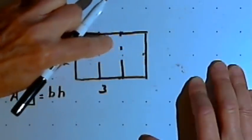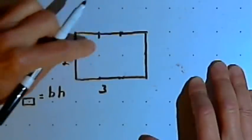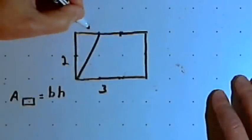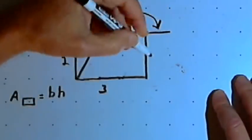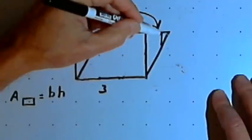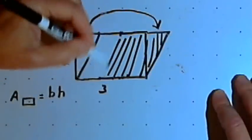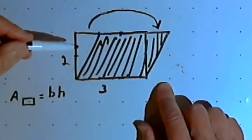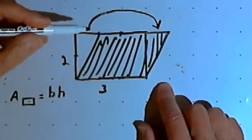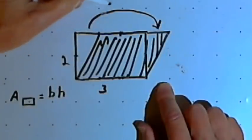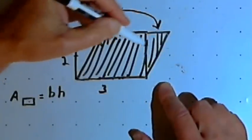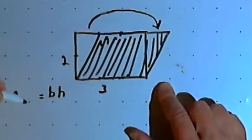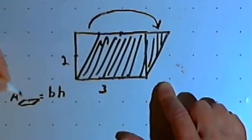Now let's go from that rectangle to a parallelogram. I'm going to start with that basic rectangle and turn it into a parallelogram. I'll take a triangular section from the left side and copy it over to the right side, forming a parallelogram. This parallelogram has a base of three and a height of two. It should have the same area as the rectangle I started with, because all I did was take one part of that rectangle and change its position, not its size. So the area of a parallelogram is also the base times the height.